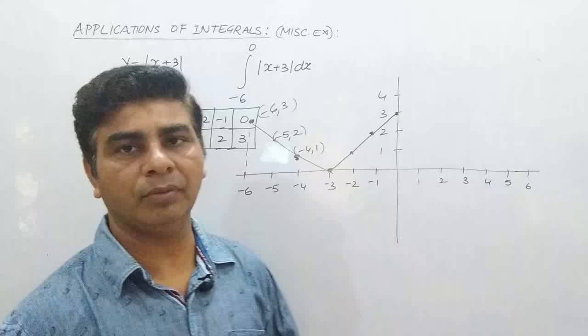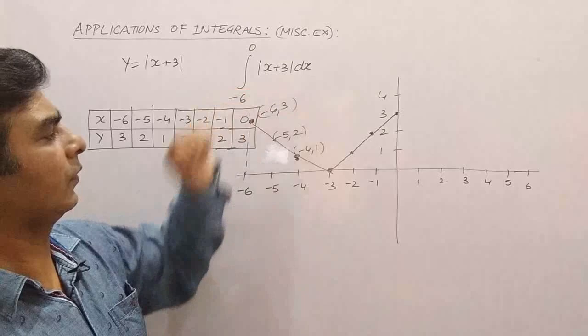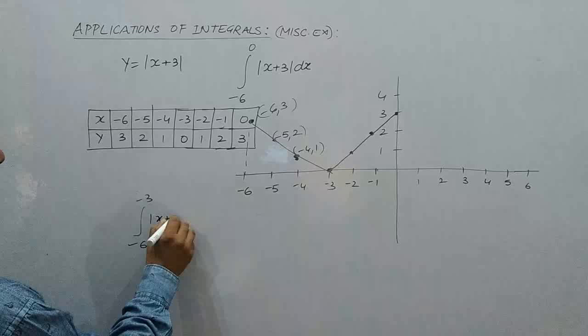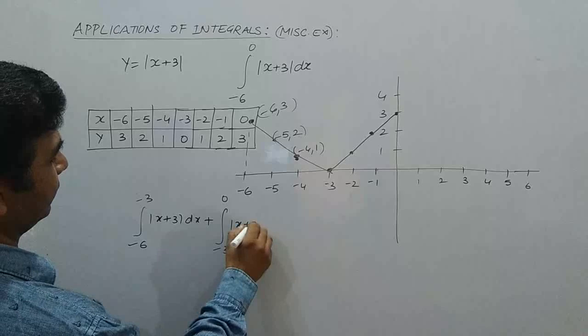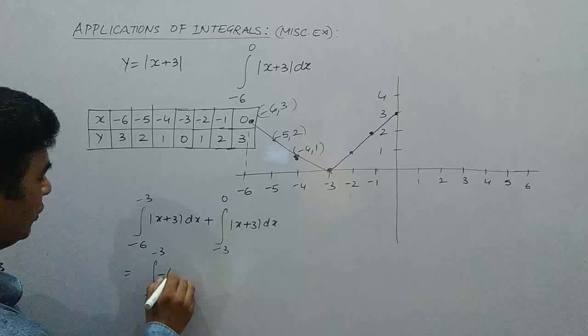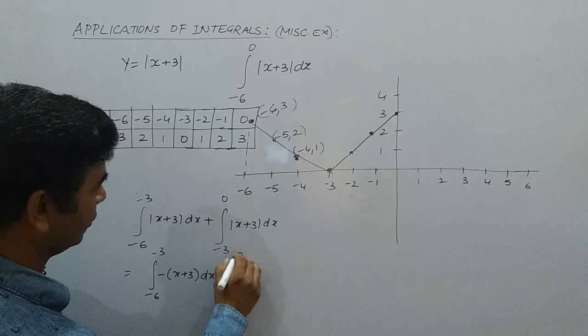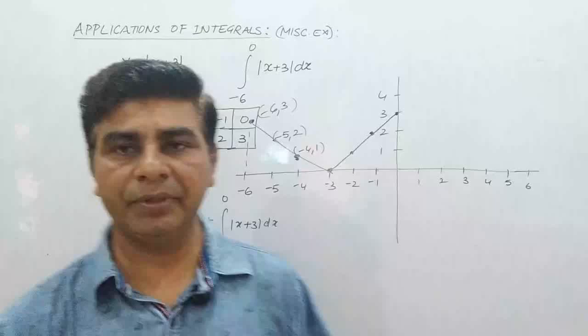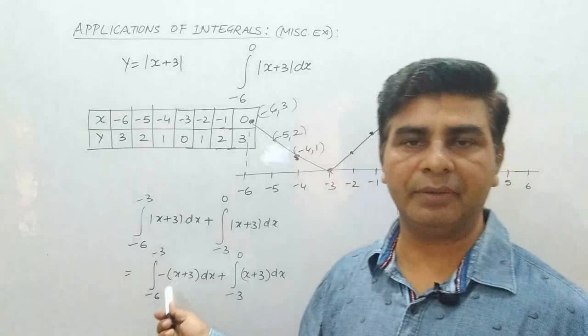If you want to find the integration of this given function, the limits are to be broken in the form of: integral from minus 6 to minus 3 of mod of x plus 3 dx, plus integral from minus 3 to 0 of mod of x plus 3 dx. The values lying between minus 6 to minus 3 are all negative, so the function is replaced by minus of x plus 3. From minus 3 to 0, this can be replaced by plus x plus 3. Now you can do the simple integration and find the solution. Use the upper limit minus the lower limit to find your answer.